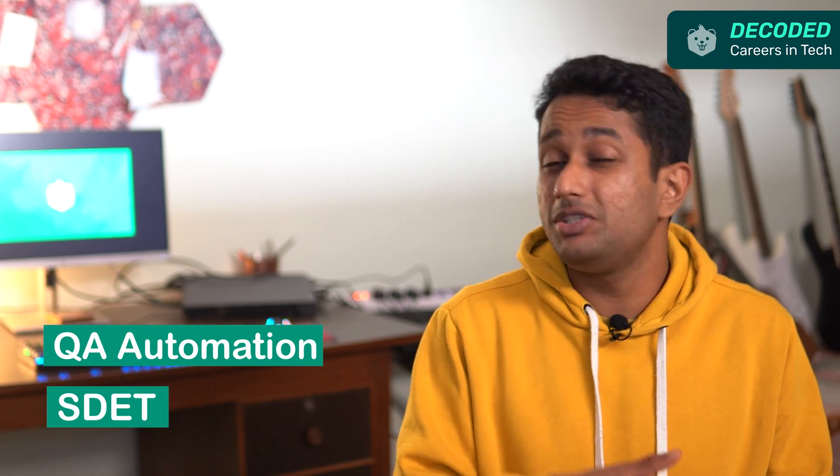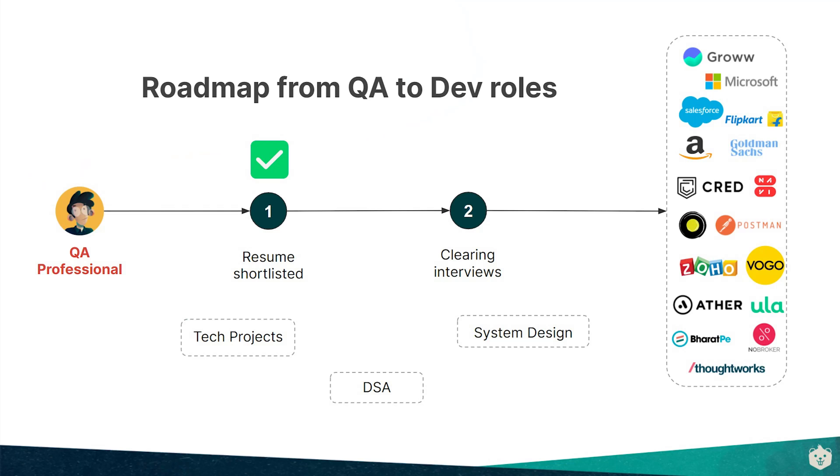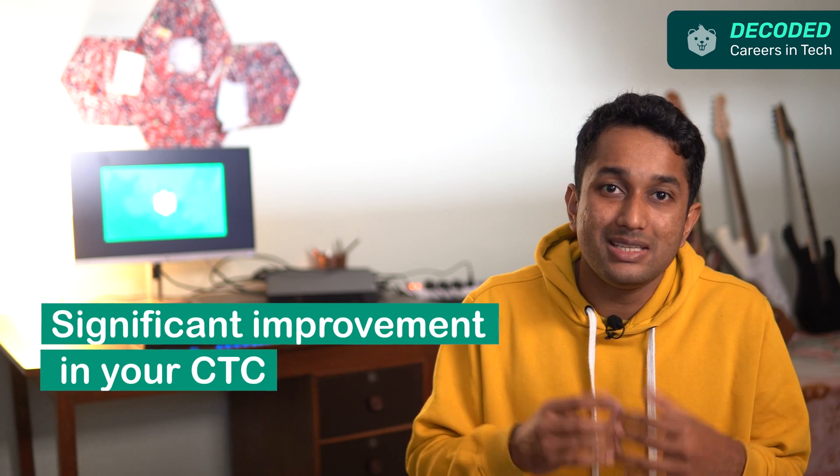Additionally, if you've done quite a bit of QA automation or SDET work where you wrote a lot of code, that makes your transition even easier. Once you have a solid portfolio, the next step is to tackle DSA and system design rounds. Most companies hire primarily through data structures and algorithms interviews. If you don't know where or how to get started with your DSA prep, concentrate on the topics in our DSA plan video — the link is in the description. Follow this plan and you'll also see a significant improvement in your CTC.